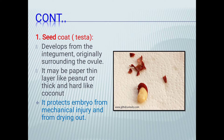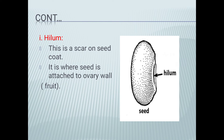Now discussing each part in detail. Seed coat, or testa, developed from the integument originally surrounding the ovule. In appearance, it may be a paper-thin layer like peanut, or thick and hard like coconut. The function of seed coat is that it protects the embryo from mechanical injury and from desiccation.